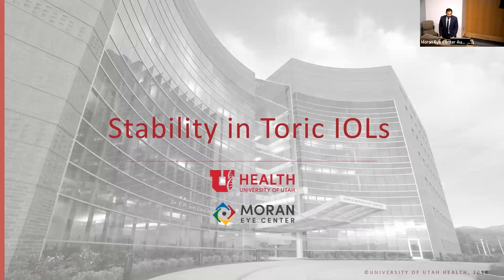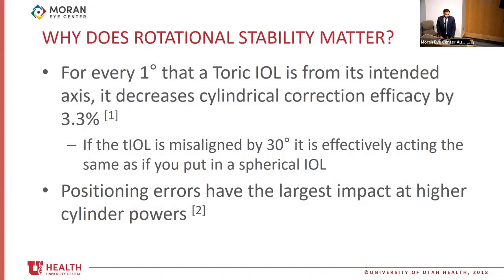To start our discussion, I'll talk about why stability matters for toric intraocular lenses. For every one degree that a toric IOL rotates from its intended axis, it decreases correction efficacy by about 3.3 percent. This means that if a toric IOL is off 30 degrees, it is effectively the same as putting in a spherical lens. For patients with higher cylindrical power, this has a larger effect on their overall vision outcome.